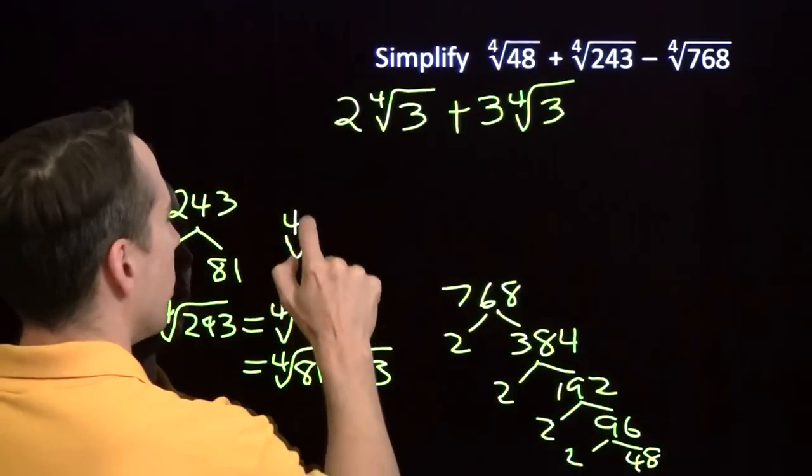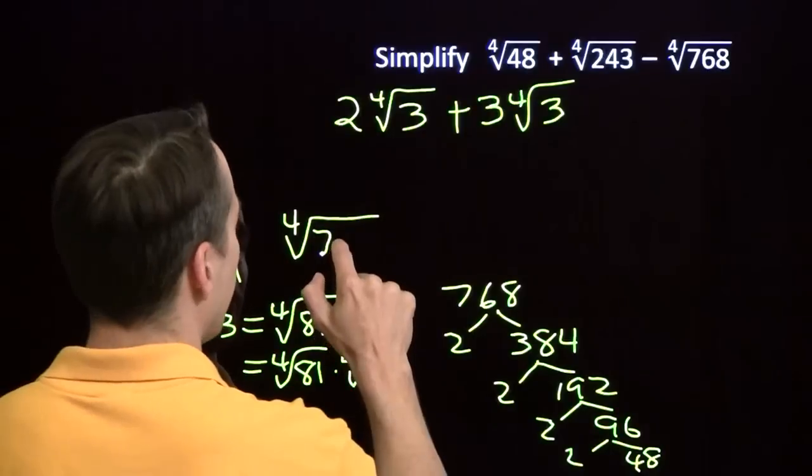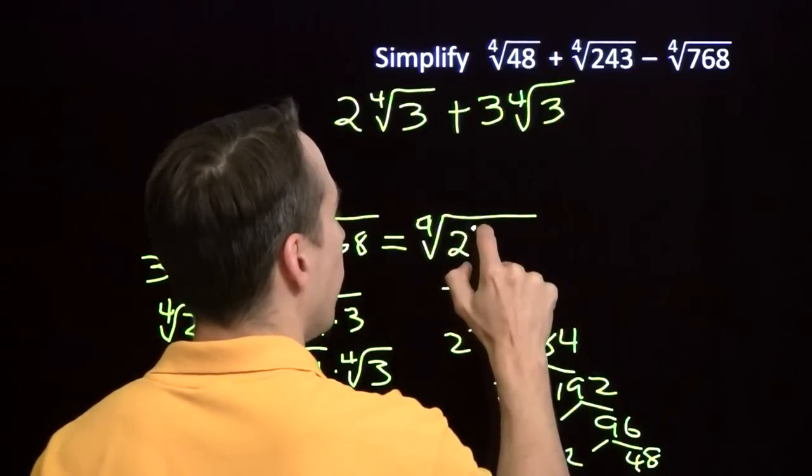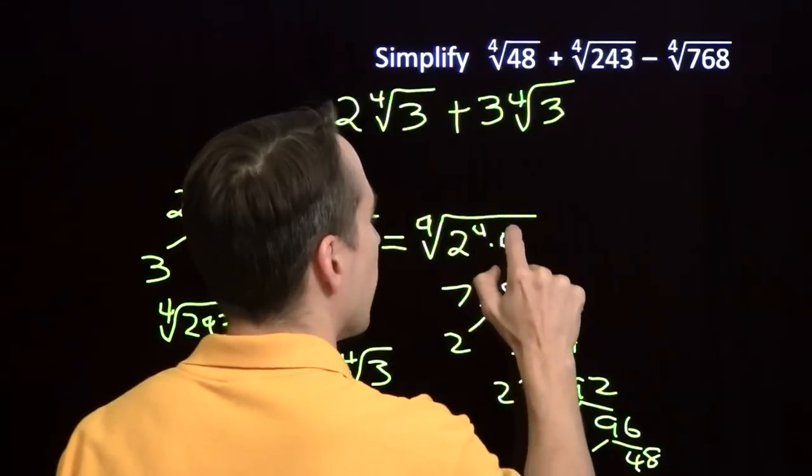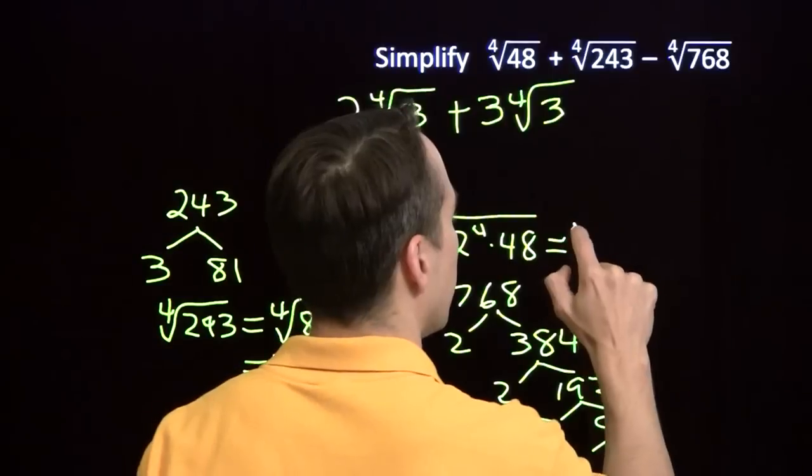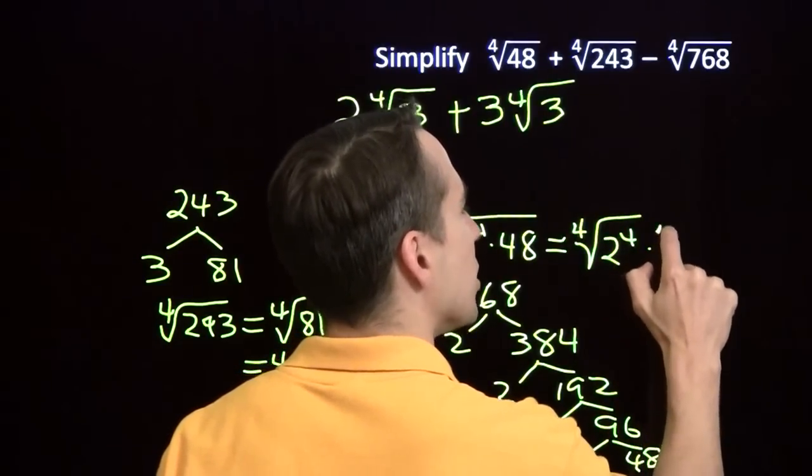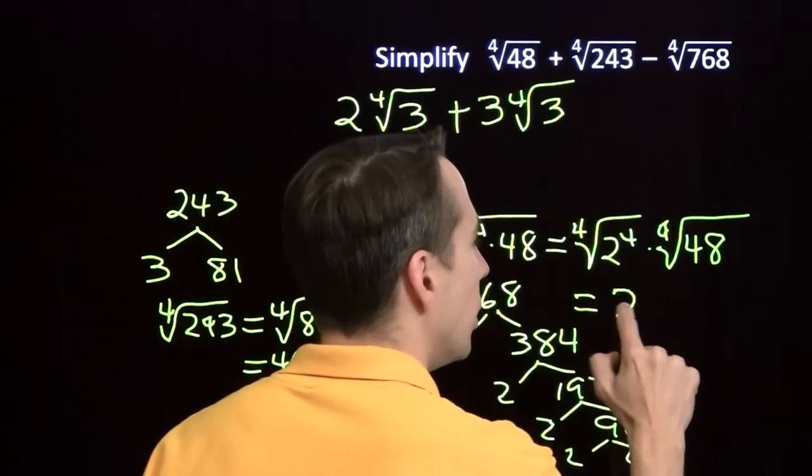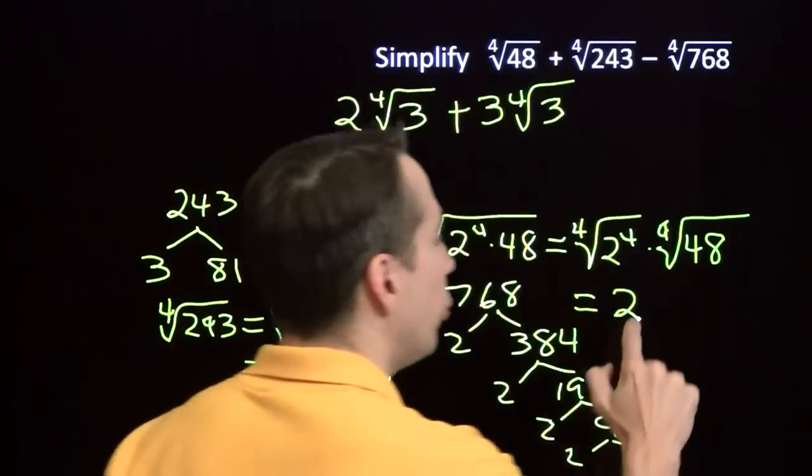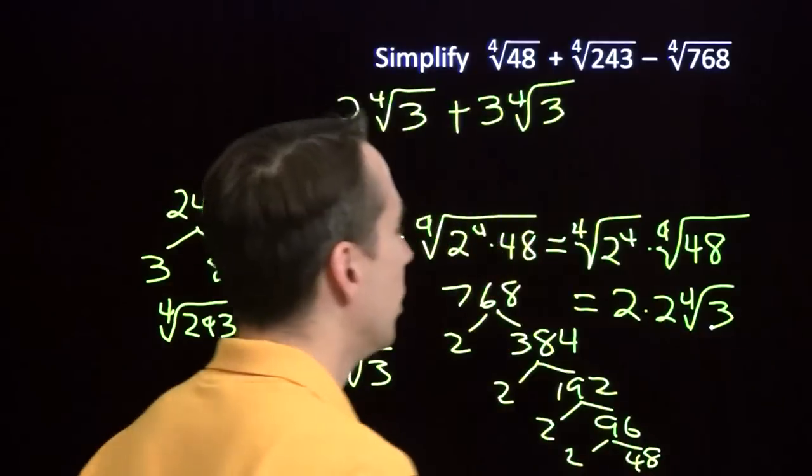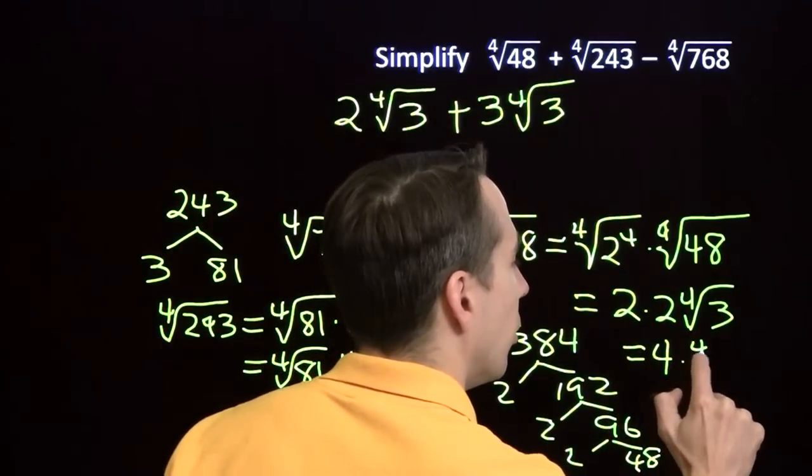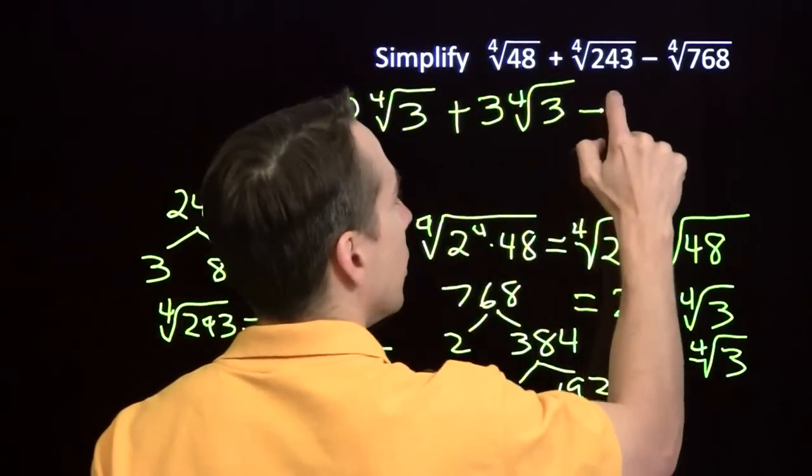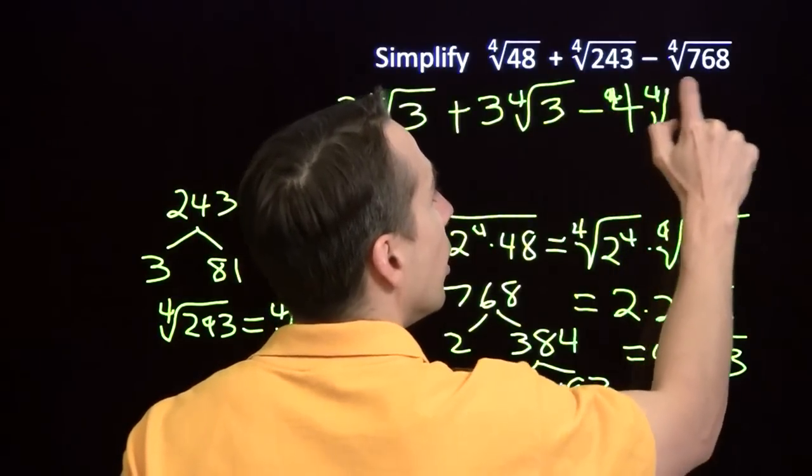So if we start out with the 4th root of 768, we get the 4th root of 2 to the 4th, got all these 2s, times 48. And that is the 4th root of 2 to the 4th times the 4th root of 48. Now the 4th root of 2 to the 4th, of course, that's just 2. And we already figured out that the 4th root of 48 is 2 times the 4th root of 3. So this all just comes out to be 4 times the 4th root of 3. And now we've simplified the 4th root of 768 to 4 times the 4th root of 3.